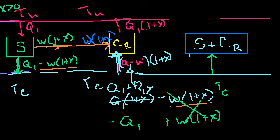Right? We could rewrite it that way. So this cancels out with that. And so the net upward movement, when we combine the two engines, is Q1 times x.